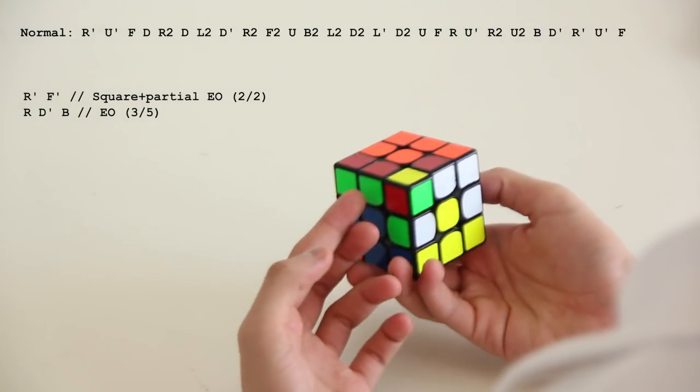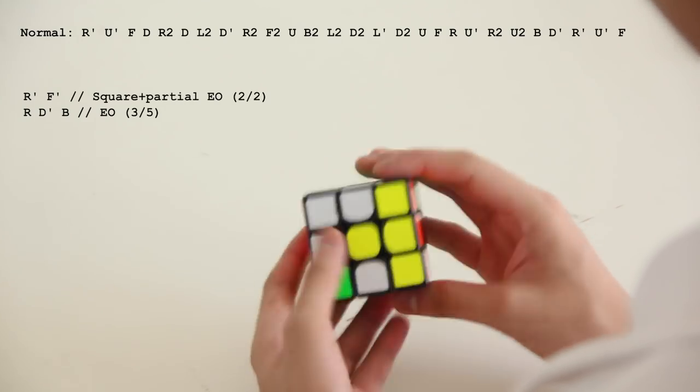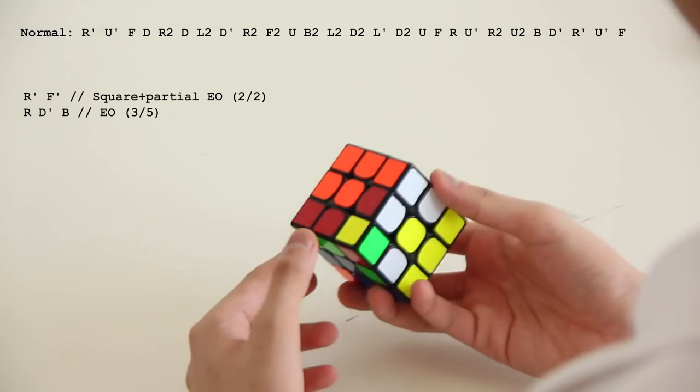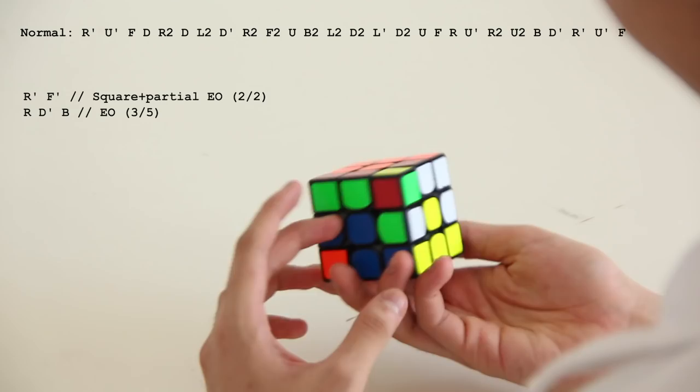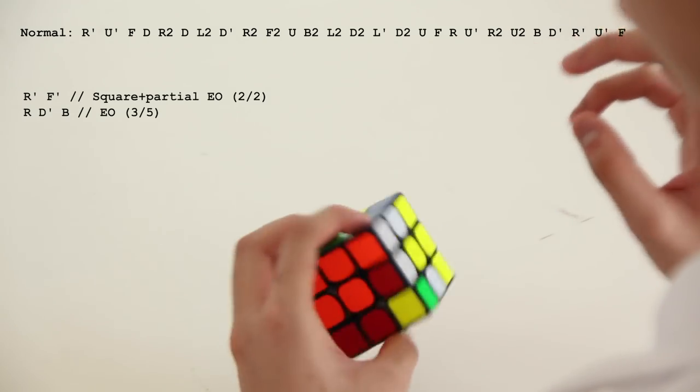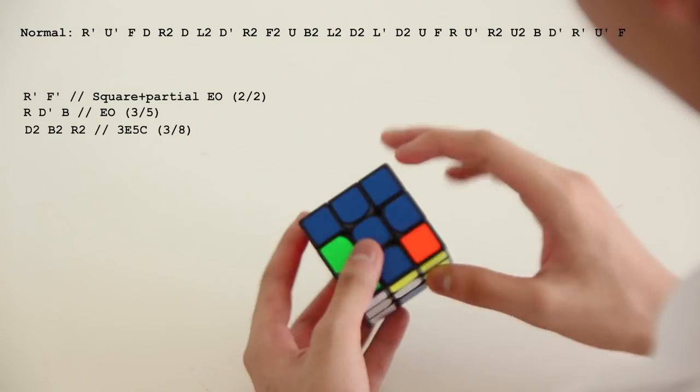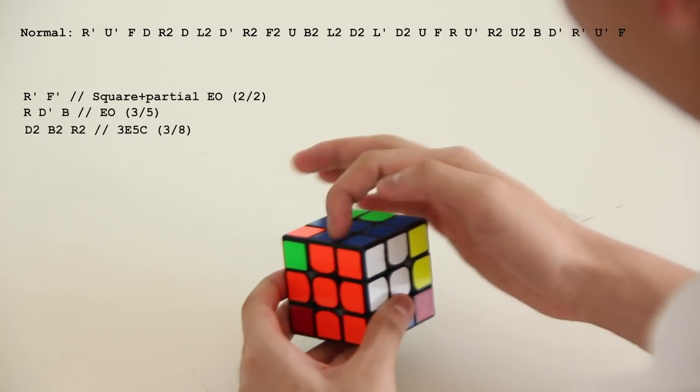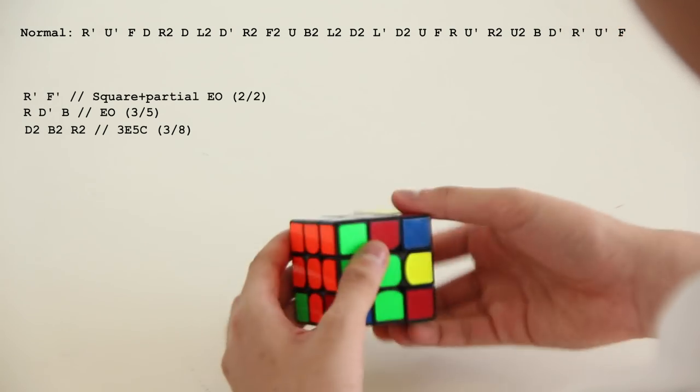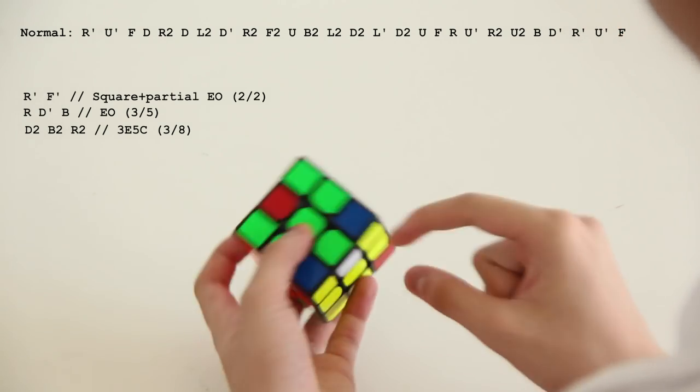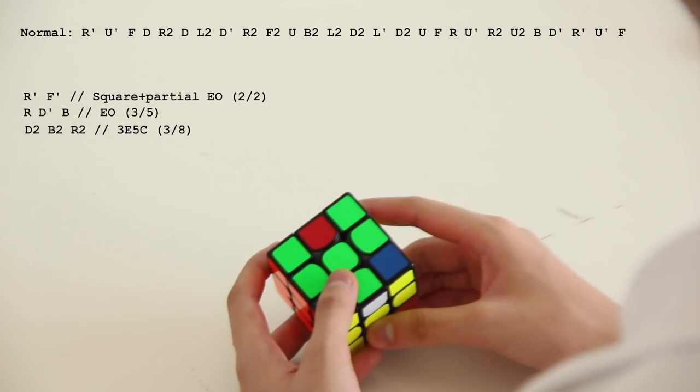So that's EO and a square in 5 moves, and I see a lot of blocks here. So I just did 3 more moves: D2 which makes the square, B2 to insert that and also makes a square, and R2. So that's 8 moves to 3 edges and 5 corners.